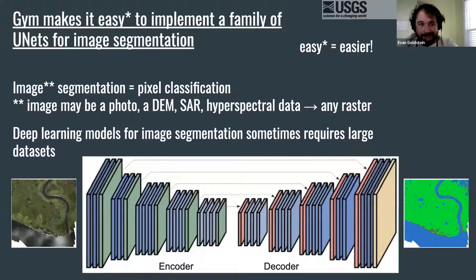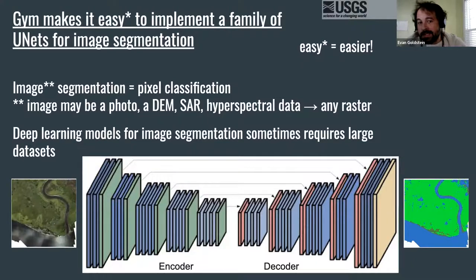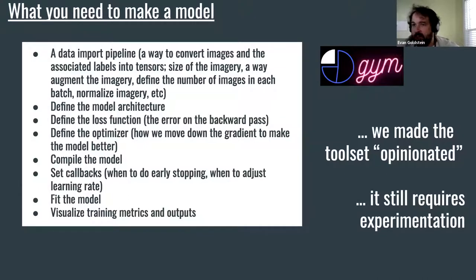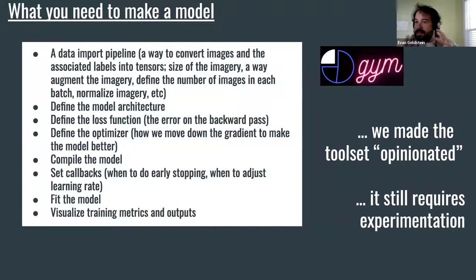That said, you still need images and labels to make models performant and work well. In general, when making a model from scratch with TensorFlow, here are the high-level pieces you need. Explaining them now will help contextualize what's inside Jim and why the configurations matter. You need a data import pipeline — a way to convert your images and associated labels into tensors, adjust the size of the imagery, and augment the imagery if you want, so that the deep learning model is able to generalize better.